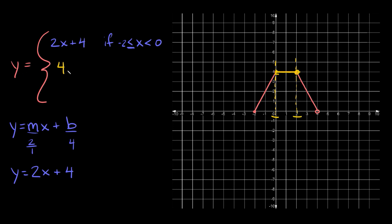So we're going to say that y equals four if x is between zero and positive two. Here we're going to say that x has to be greater than zero. And remember, we have a closed circle at x equals zero.